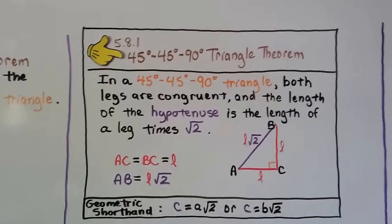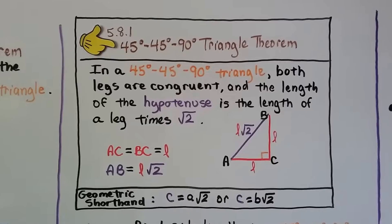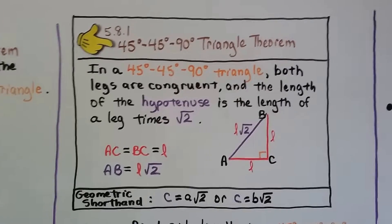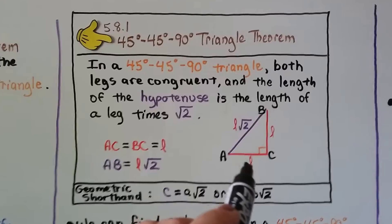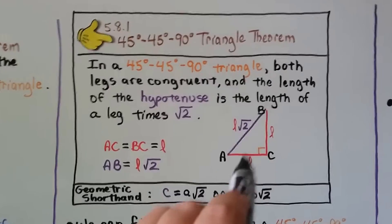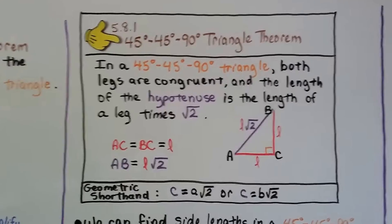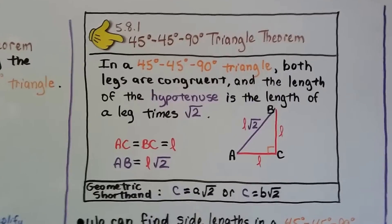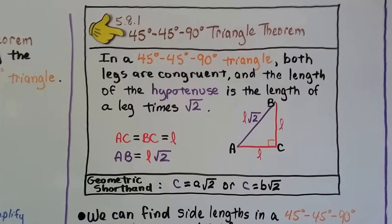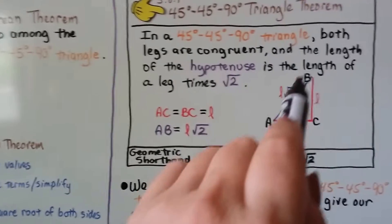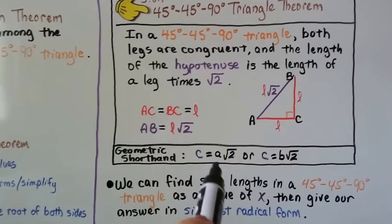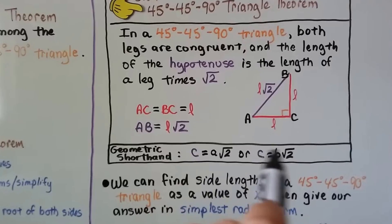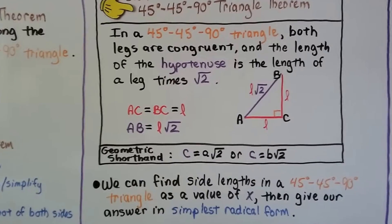That brings us to the 45-45-90 triangle theorem. In a 45-45-90 triangle, both legs are congruent — so if we know one leg, we have them both. The length of the hypotenuse is the length of one leg times √2. So for the Pythagorean theorem, the hypotenuse c equals leg a times √2, or leg b times √2, since they're congruent.